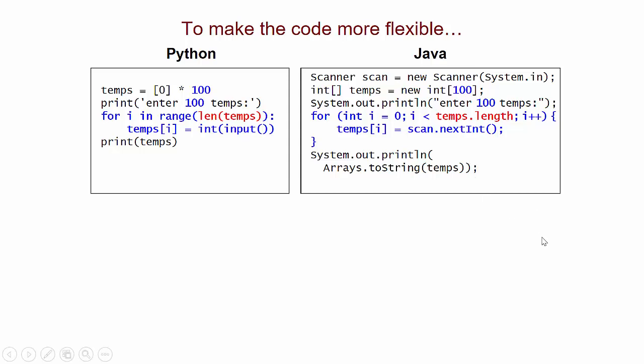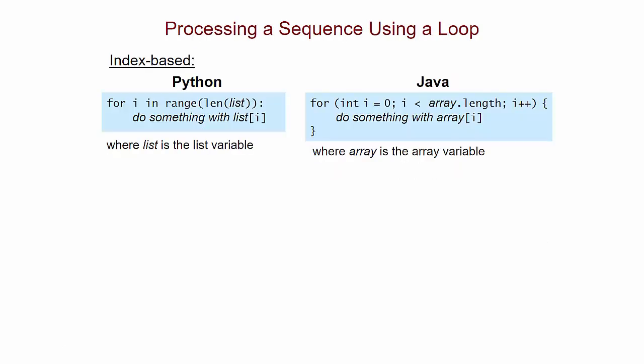Okay, so these loops, these index-based loops, are part of a more general pattern. We use index-based loops to process sequences all the time. And so here's the more general pattern in Java. i starts at zero, i is less than the length of the array, i++. And then in the body of the loop, we do something with element i of the array.